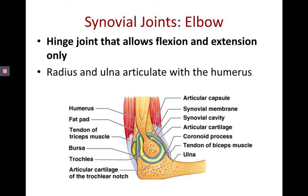The elbow is a hinge joint that only allows uniaxial movement along the sagittal plane — flexion and extension. The radius and ulna articulate with the humerus, specifically the trochlea of the humerus fitting with the trochlear notch of the ulna.